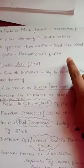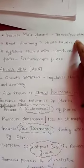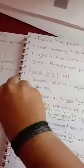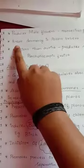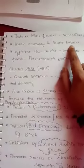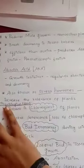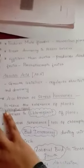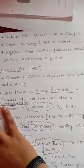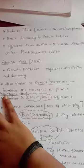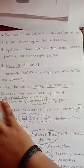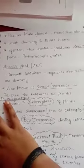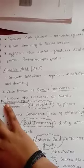Gibberellins produce many male flowers in monoecious plants, which possess only the male character. They also break dormancy in potato tubers. Gibberellins are more efficient than auxins in delaying aging in plants, and they produce seedless fruits, which are called parthenocarpic fruits.